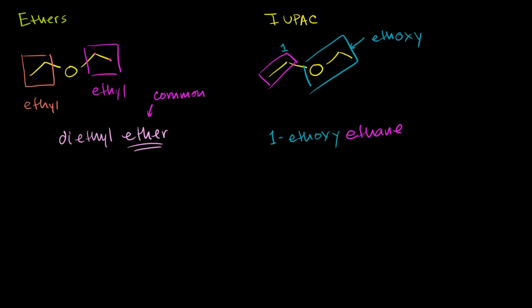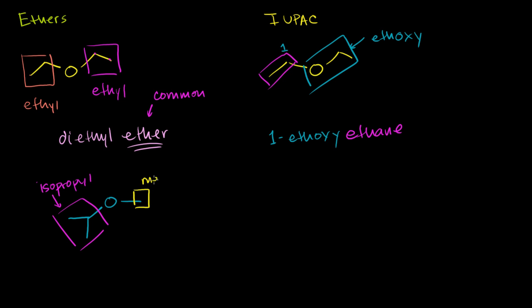Let's do another one. We have a molecule with an oxygen in the middle. The group on the left has three carbons, and we're attached to the middle carbon, so this is an isopropyl group. On the right-hand side we just have one carbon, so this is a methyl group. For the common name you list both groups in alphabetical order and write ether at the end. I comes before M, so the common name is isopropyl methyl ether.